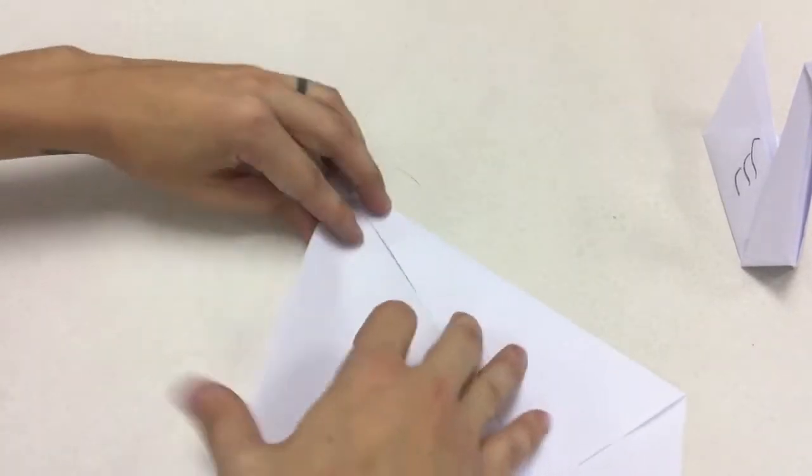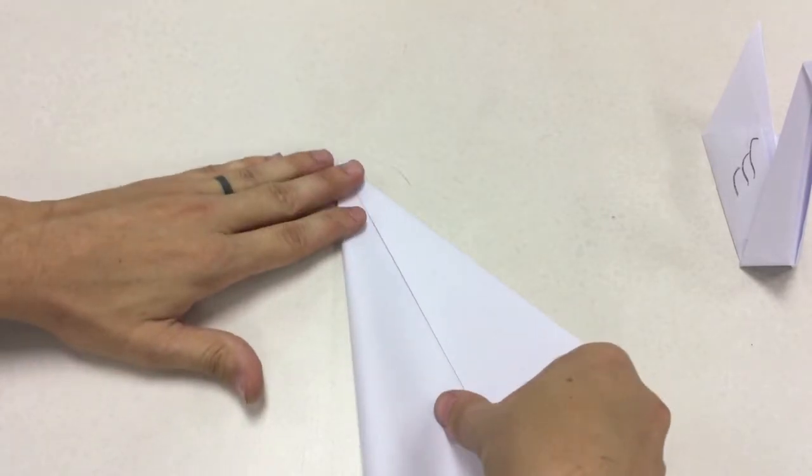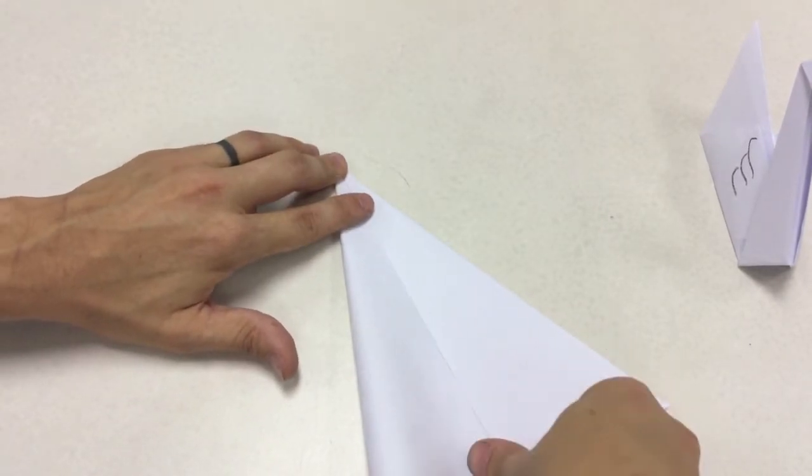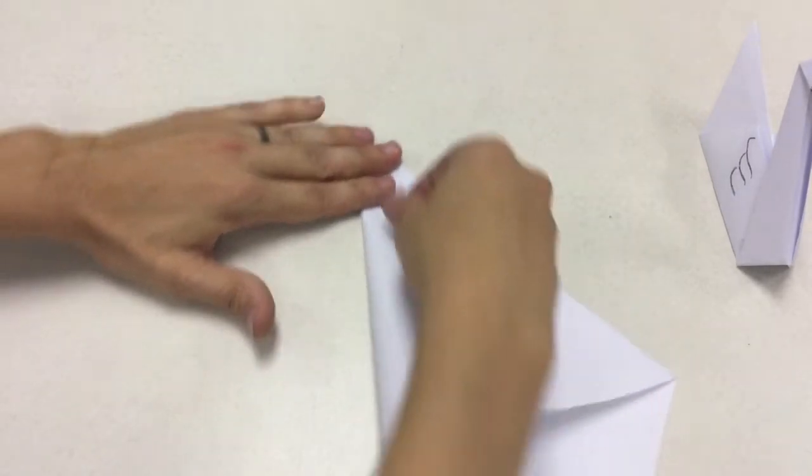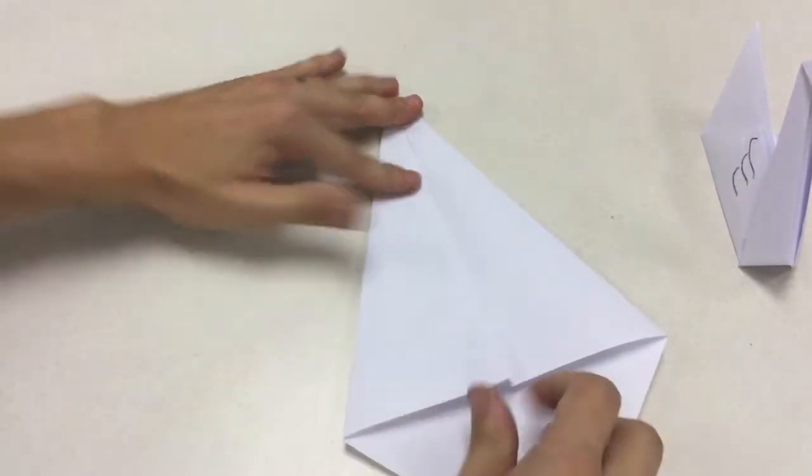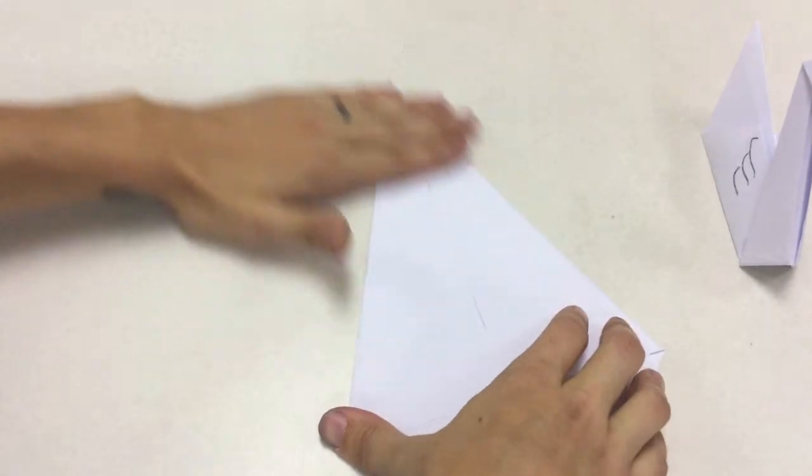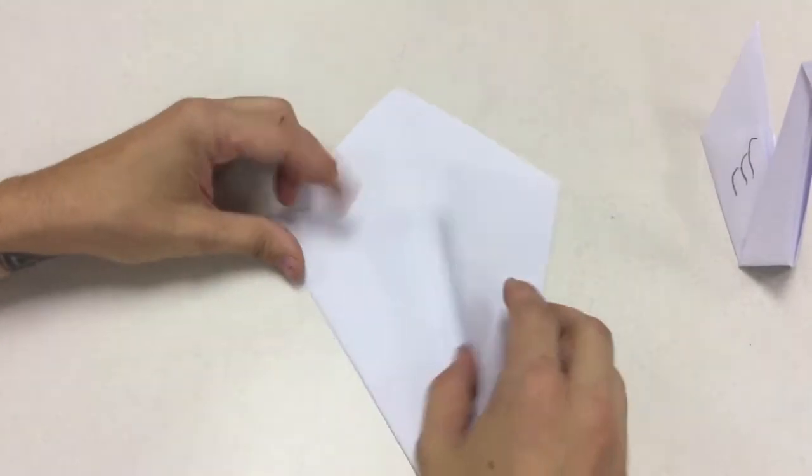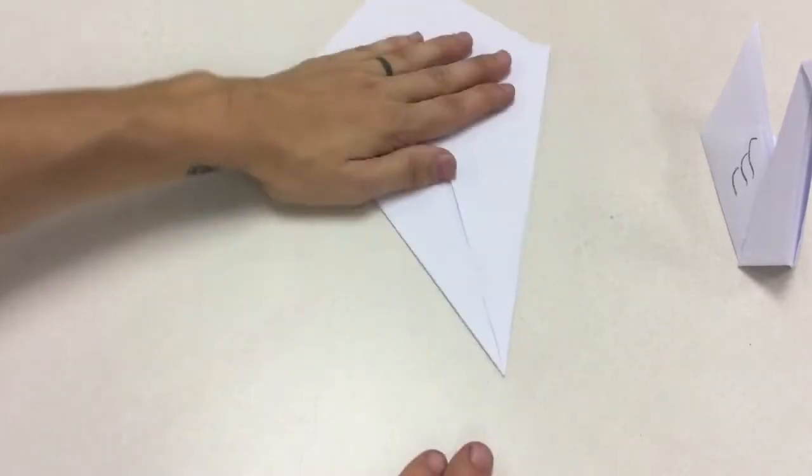Sometimes you got to rotate the paper to get a good angle. Crease it. Not perfect but it'll work. Now it looks kind of like I have a kite. I folded both of these in like that.